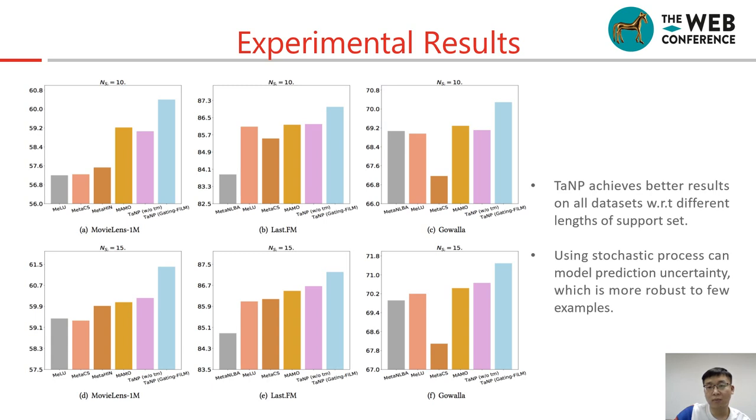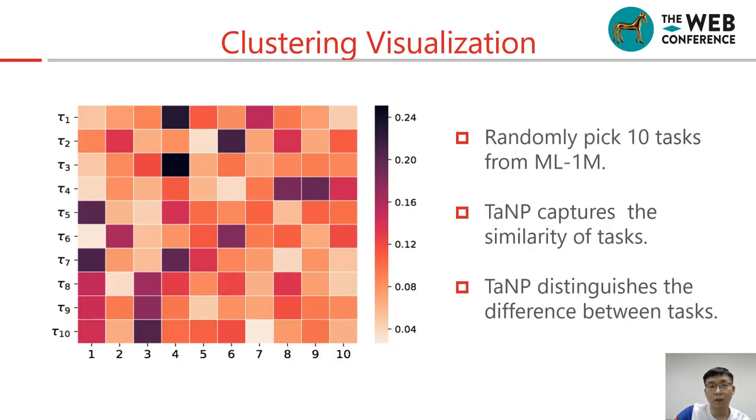Using stochastic process can model prediction uncertainty, which is more robust to few examples. We also implement clustering analysis. We randomly pick 10 tasks from ML 1 million. From it, we observe that our model captures the similarity of tasks and we can distinguish the difference between tasks.